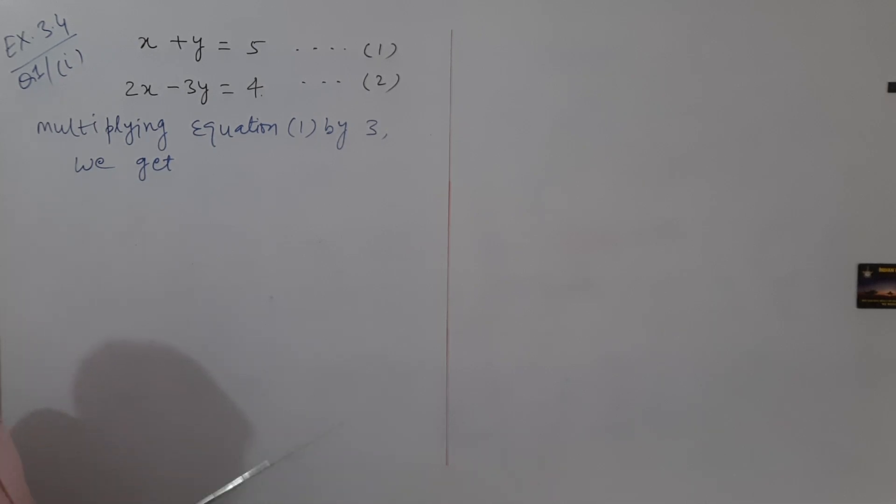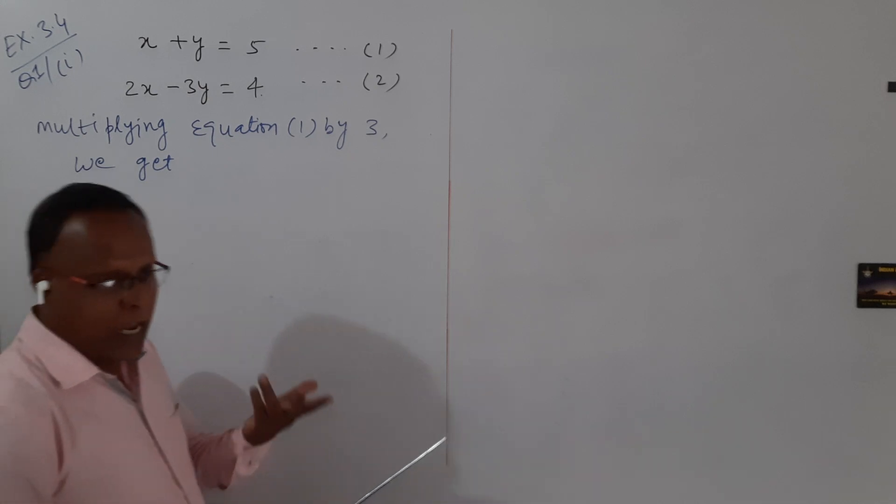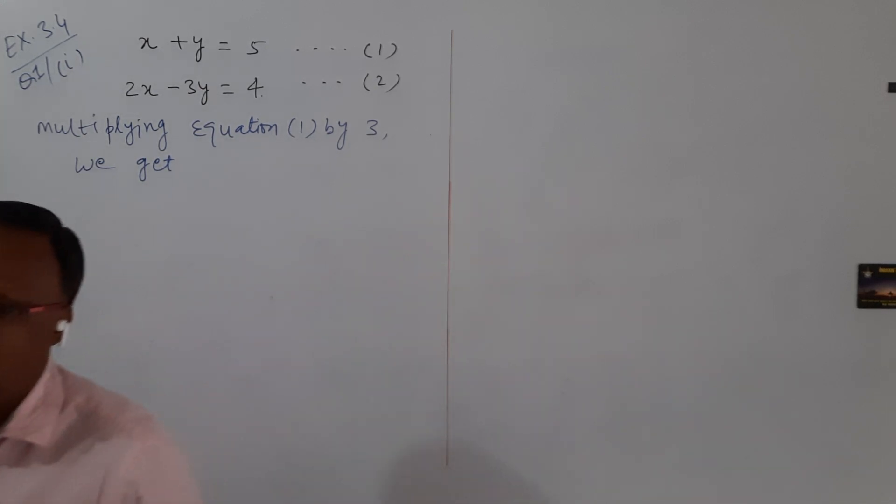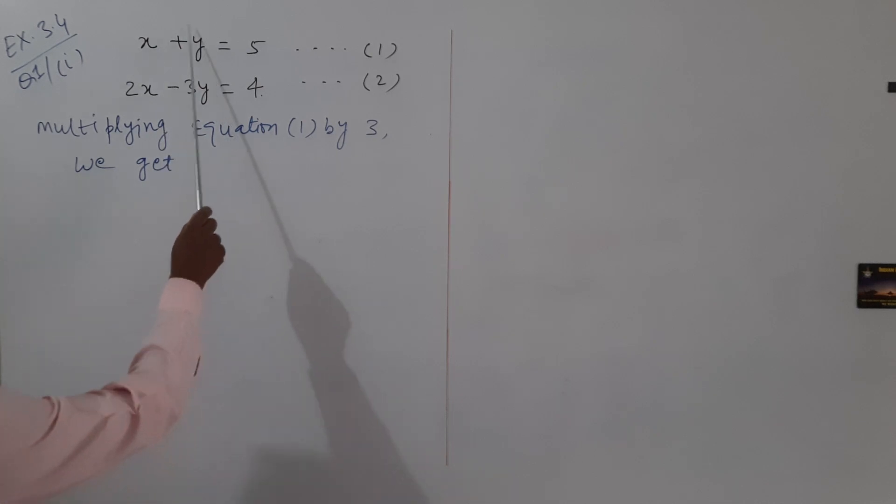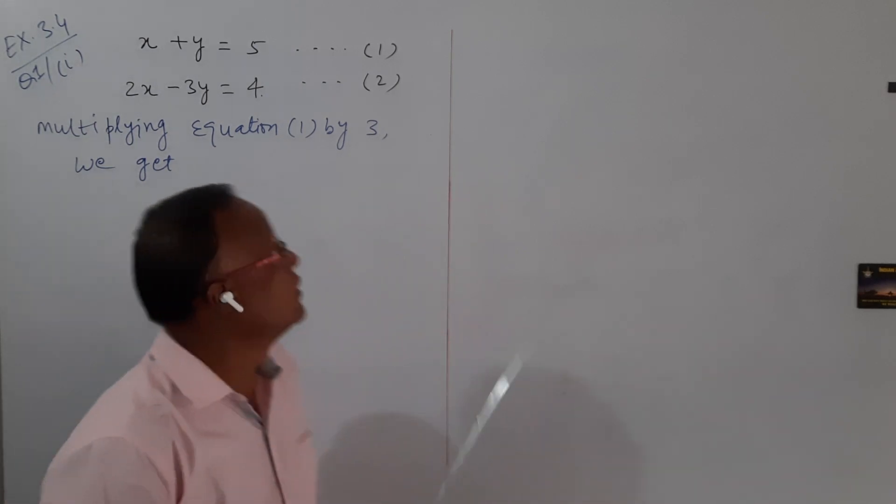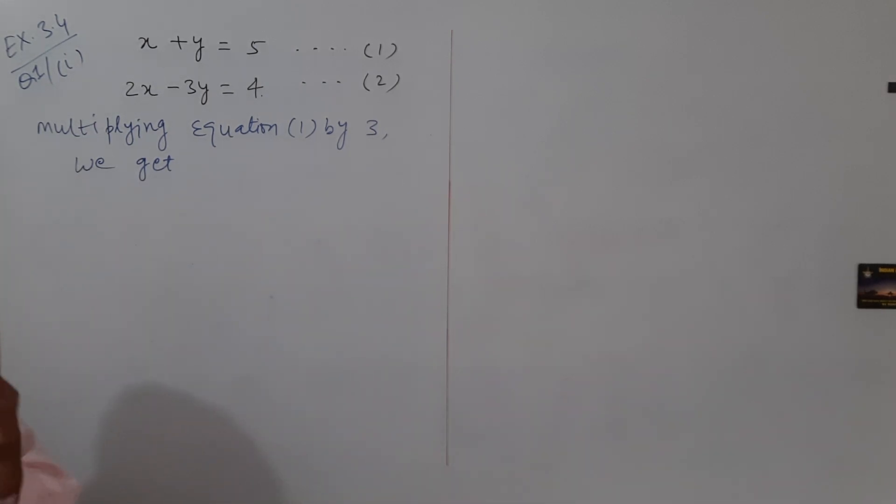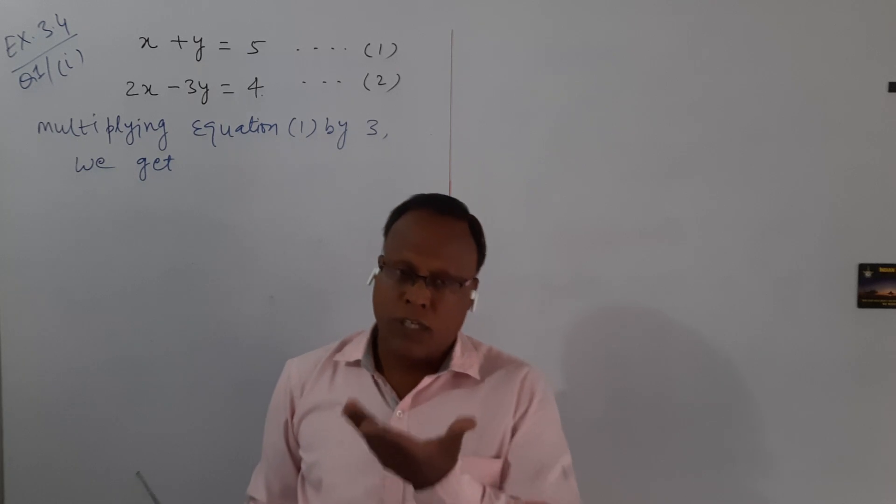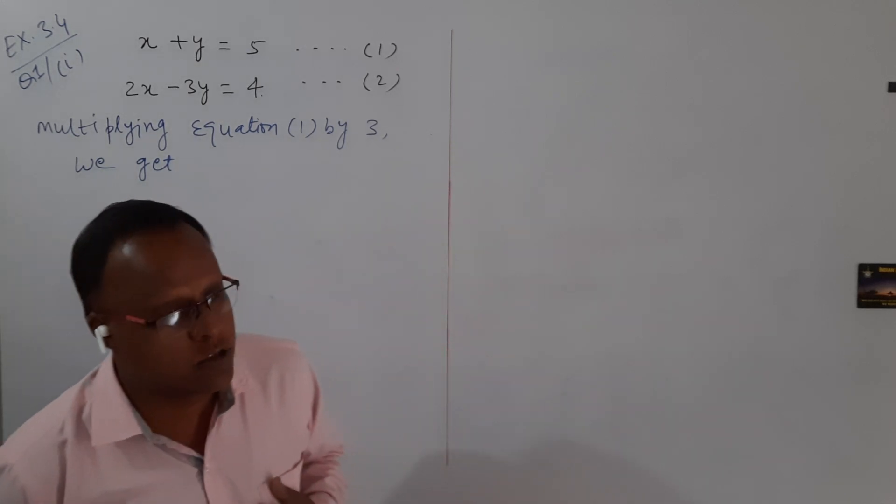For that, we need to multiply one equation or sometimes both equations by some multiplier factor. Here we multiply equation 1 by 3. Why do I make the coefficient of y the same? Because here is a plus sign and here is a minus sign, so it is easier for us to solve it.